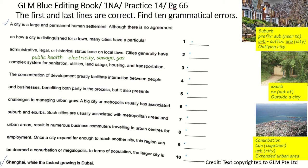Next, identify the genre of the text. Read the first line: 'A city is a large and permanent human settlement.' This tells you that the genre of the text is a factual article. Next, identify the dominant tense. The verb in the first line is 'is', so the dominant tense is simple present tense. Write down that it's simple present tense so that you will be reminded when you are doing the questions.